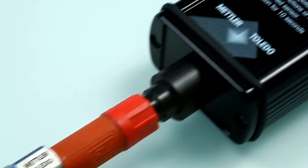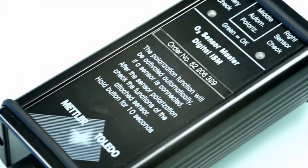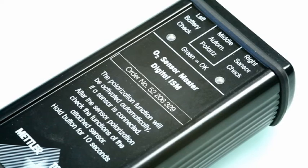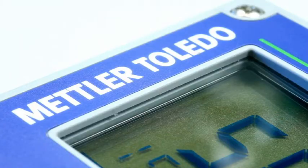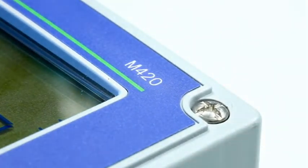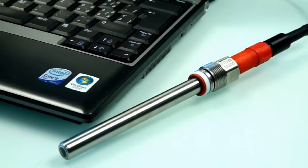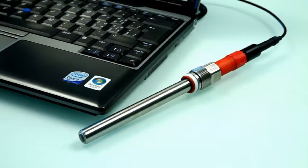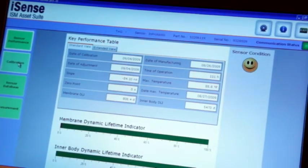For polarizing the sensor, three options are available. You can use our polarizer and checking unit called SensorMaster. You can use the transmitter the sensor will be connected to during operation. Or you can polarize it on iSense, the PC-based asset suite that allows you to monitor the health status of your sensor.